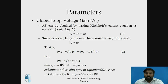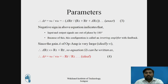Since V1 is approximately zero because it is connected to ground, V2 becomes minus VO divided by A. Substituting this value of V2 into the equation, we get: (VIN plus VO/A) divided by R1 equals (minus VO/A minus VO) divided by RF. By rearranging, we get the exact equation for AF: AF equals VO divided by VIN equals minus A·RF divided by (R1 plus RF plus A·R1).